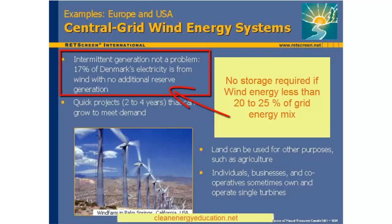Rather, the grid accepts the wind-generated electricity when it is available. Electric grids are designed and constructed to accommodate electric demand that varies over time, as consumers unpredictably turn loads on and off. Wind turbines can be considered negative loads that also vary with time. The same systems that compensate for changes in the amount of electricity being demanded from the grid by consumers can also compensate for changes in the electricity being supplied to the grid by wind turbines.